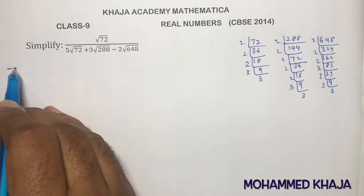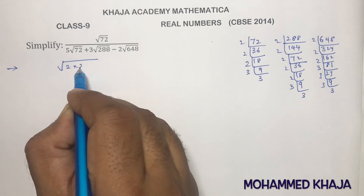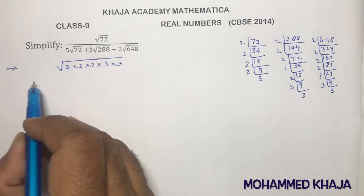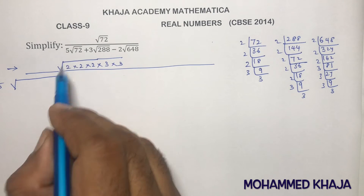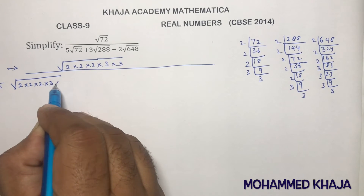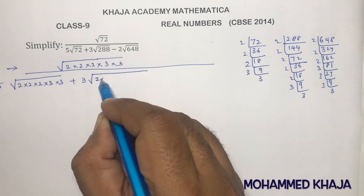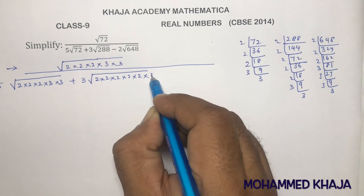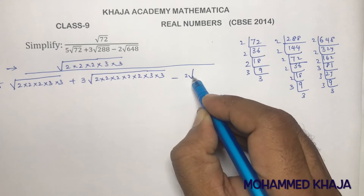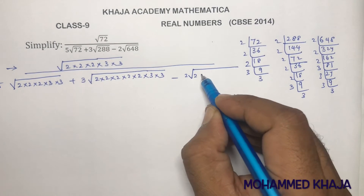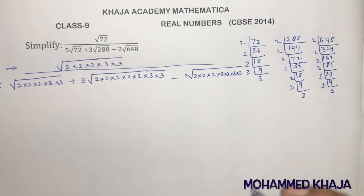Substituting: √72 = √(2 × 2 × 2 × 3 × 3), for the denominator 5√72 = 5√(2 × 2 × 2 × 3 × 3), plus 3√288 = 3√(2 × 2 × 2 × 2 × 3 × 3), minus 2√648 = 2√(2 × 2 × 2 × 2 × 3 × 3 × 3 × 3).